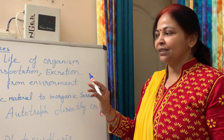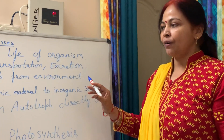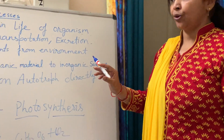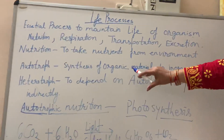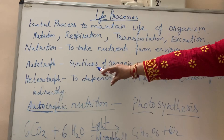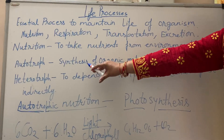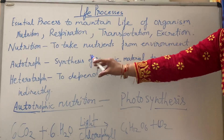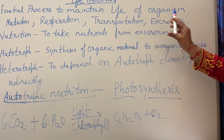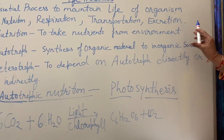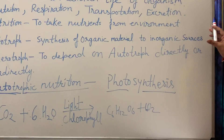On the basis of nutrition, there are two types of organisms: autotrophs and heterotrophs. Autotrophic organisms are those which synthesize organic material with the help of inorganic sources.